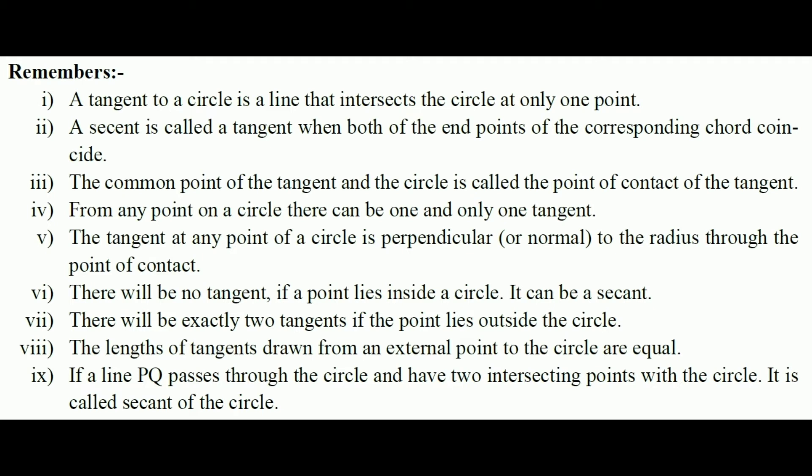Point 6: There will be no tangent if a point lies inside a circle — it will be a secant line. This means a tangent can be drawn only from a point on the circumference of the circle, not from a point inside it.